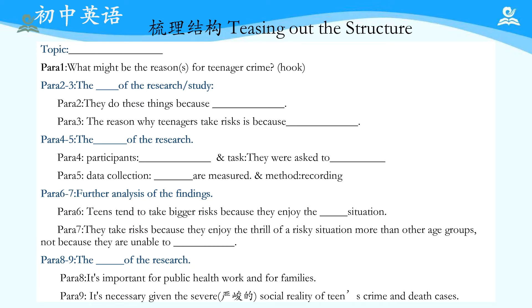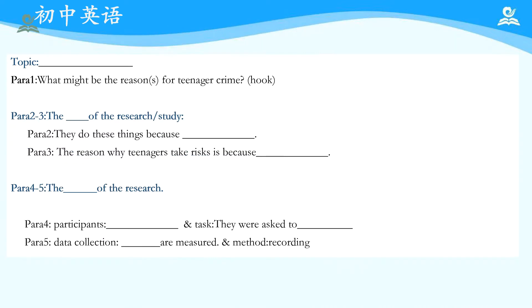同学们做完之后，咱们从梳理结构入手来剖析这篇文章。通览全篇之后我们可以发现，文章的题目正是这篇文章的话题：Why do teens take risks? 第一段只有一句话：What might be the reasons for teenagers' crime? 可以把它看成一个hook，就是eye-catching point来吸引读者的注意，引出了一个相关的社会话题——青少年犯罪问题。